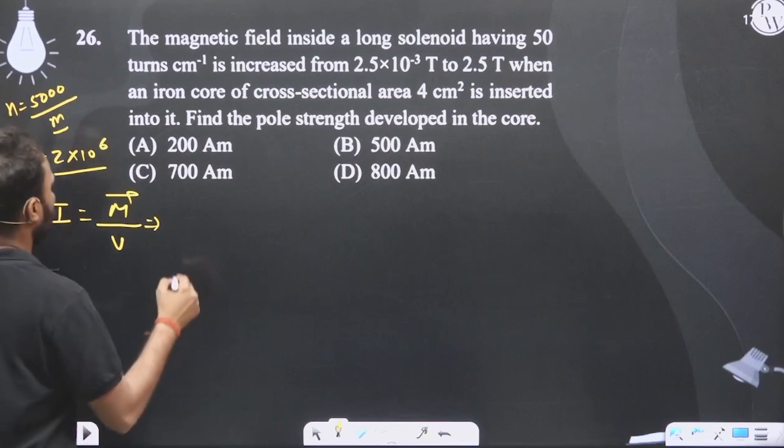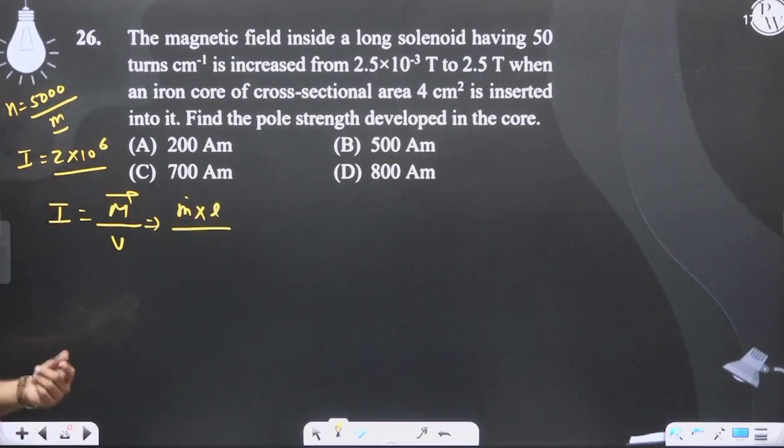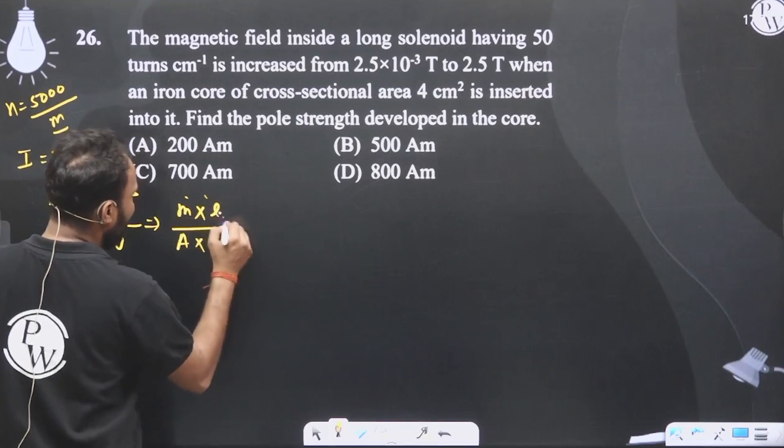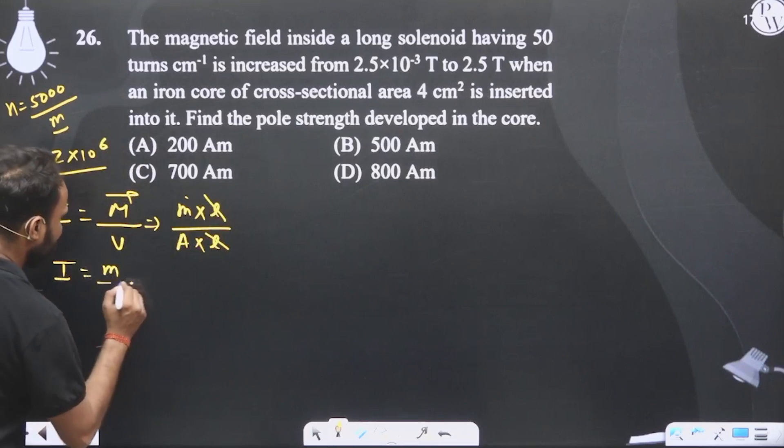If we write net magnetic moment for a bar magnet, it will be m into l, where m is the pole strength and l is the length of the magnet. If we write volume then area into l, l and l will get cancelled out. So I is nothing but pole strength per unit cross-section area.